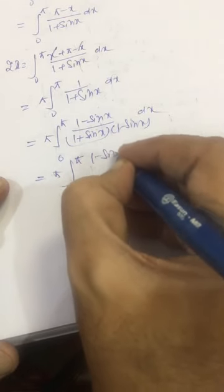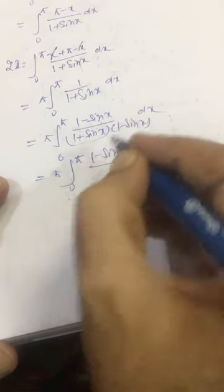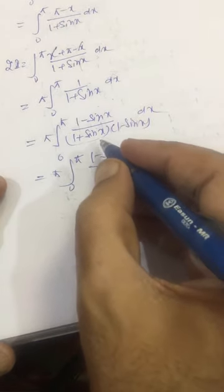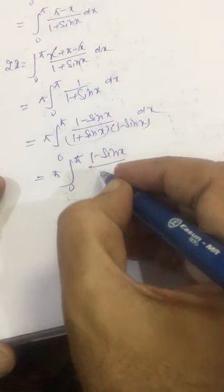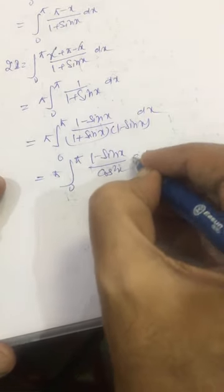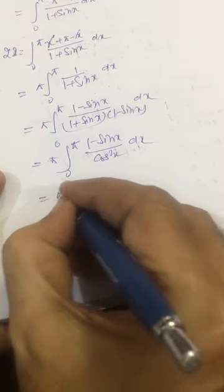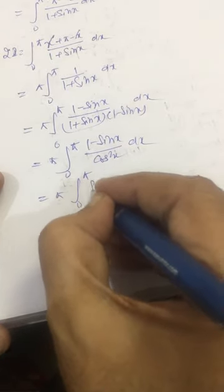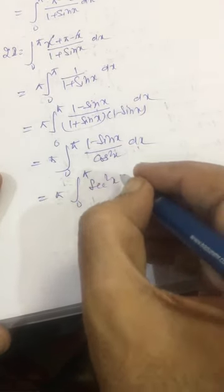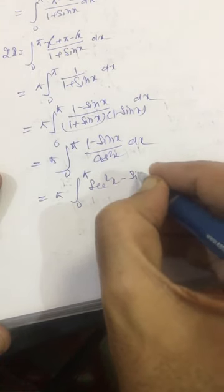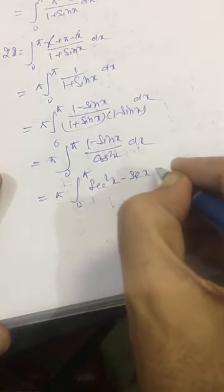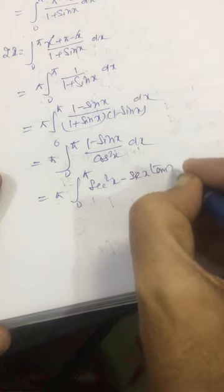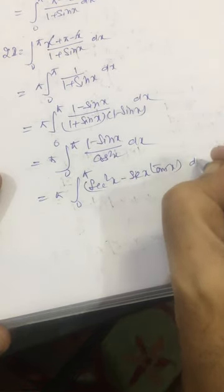This is pi times integral 0 to pi of (1 minus sin x) divided by cos²x dx. Now, 1 upon cos²x is sec²x and sin x upon cos²x is sec x tan x.